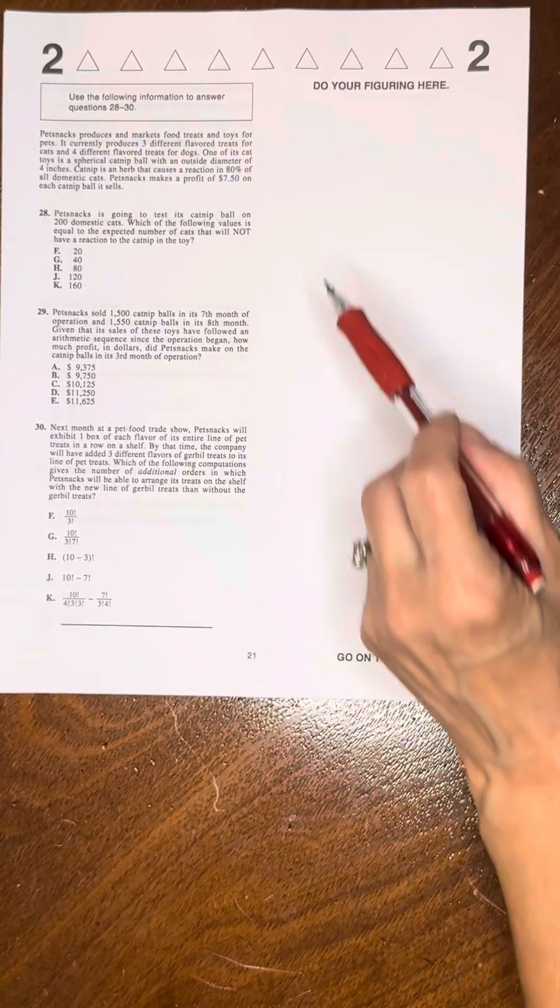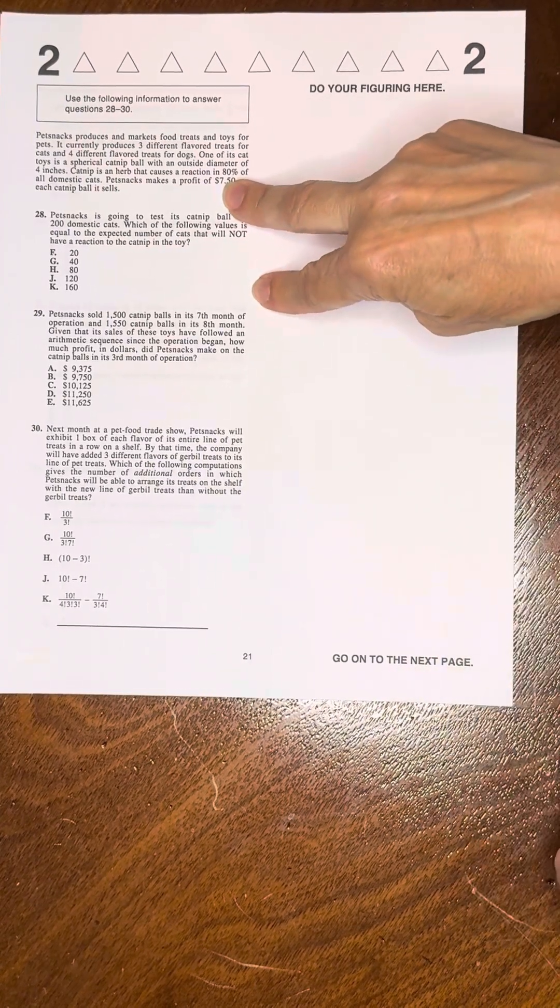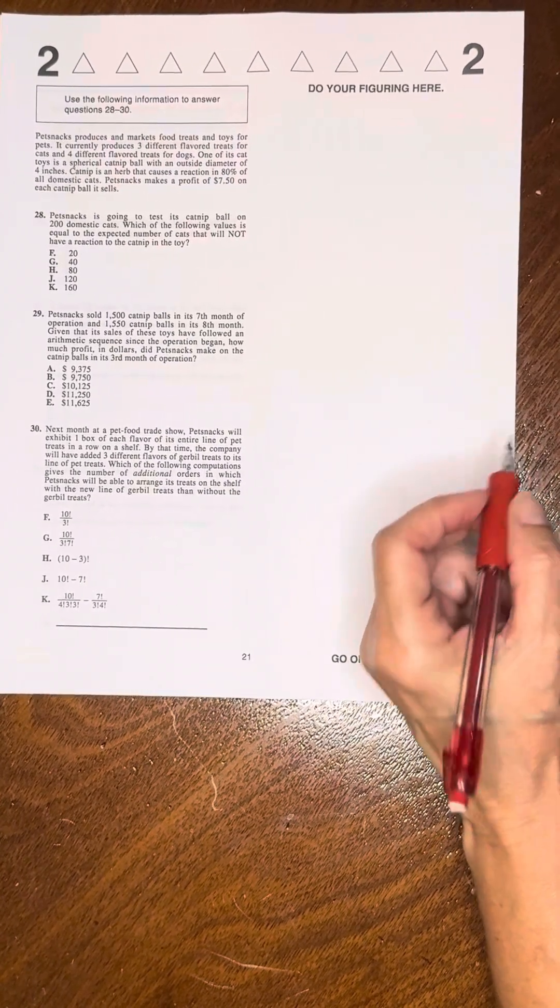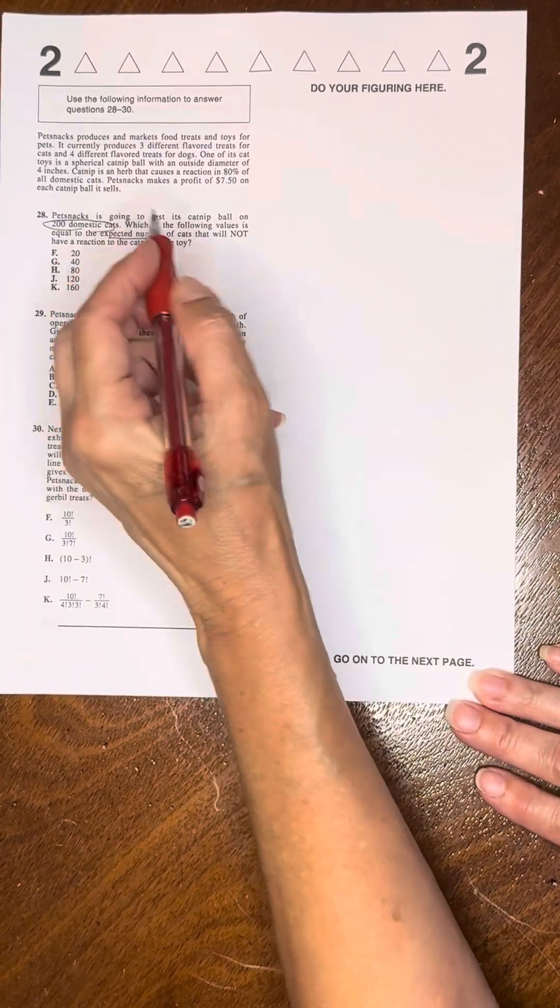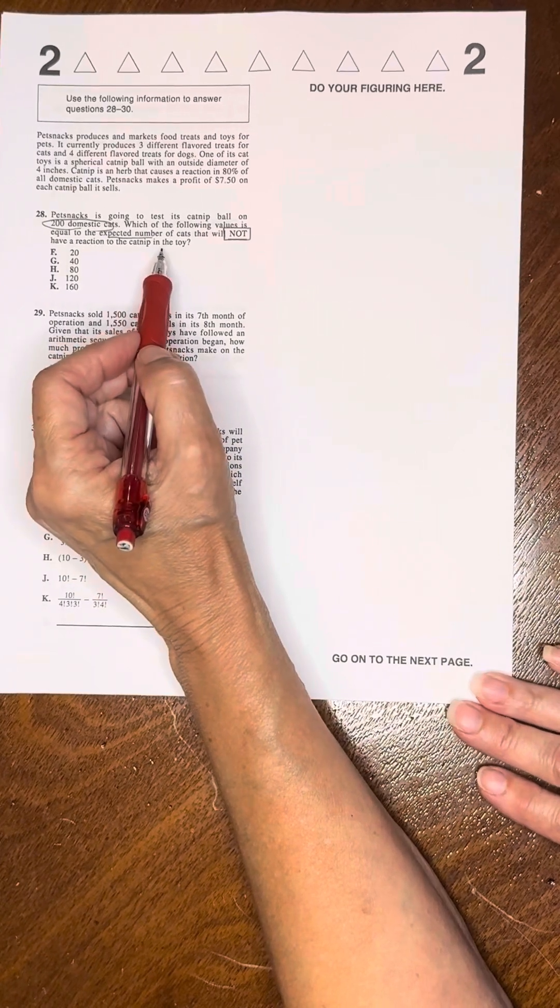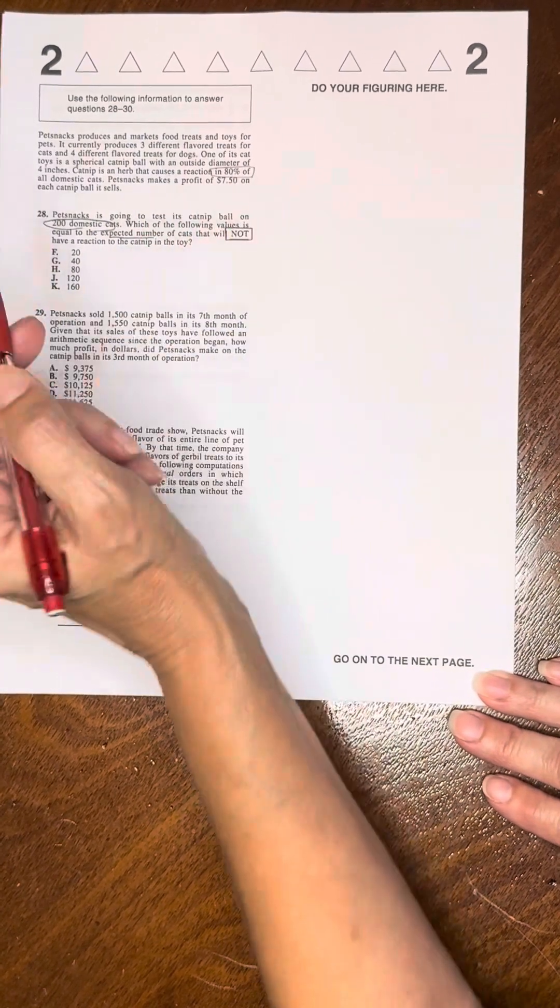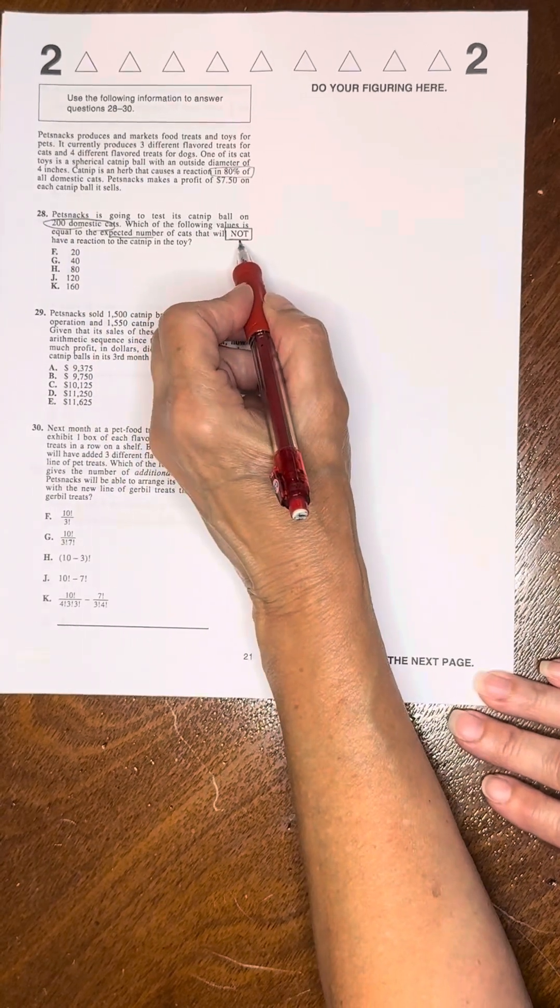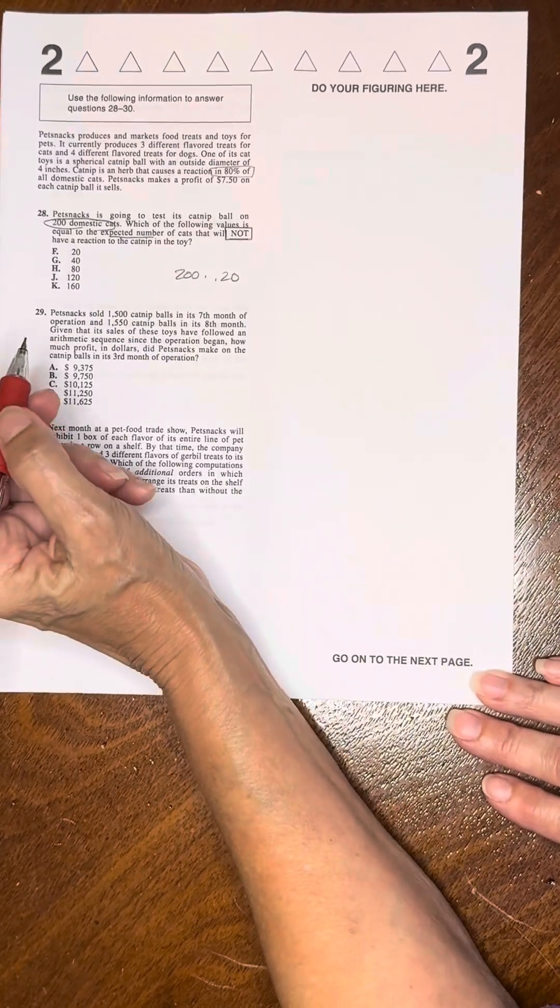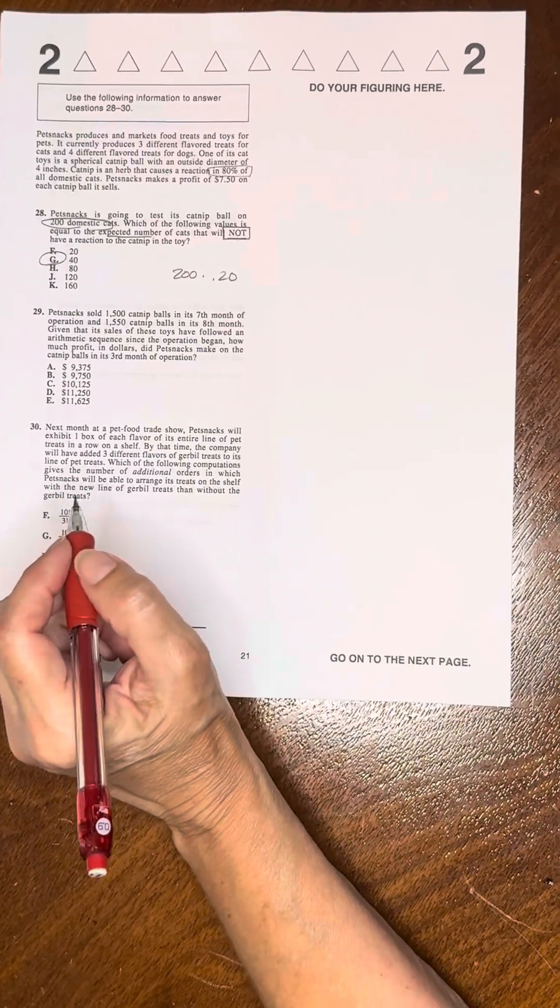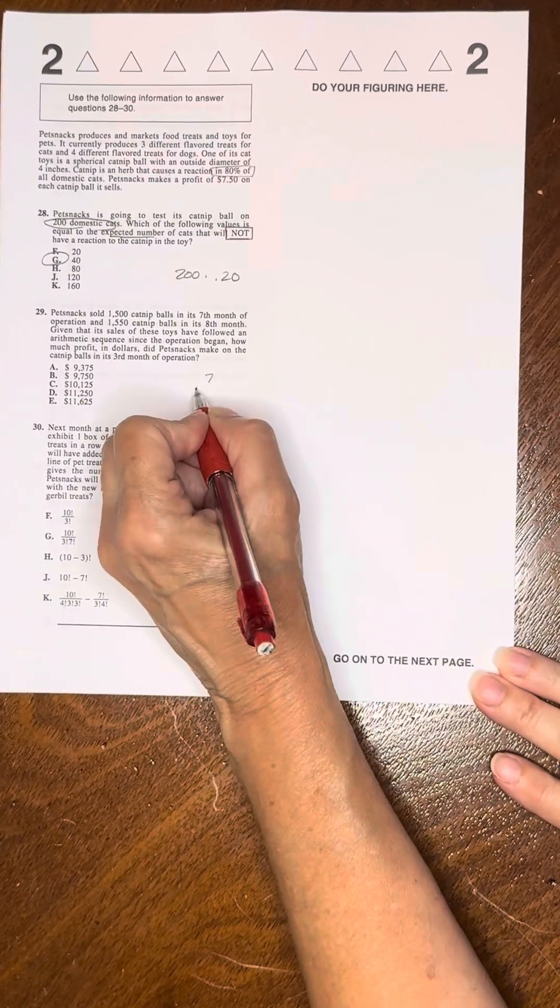Always when you have questions under one set of data, you read the questions first. Problem 28: Pet Snack is going to test its catnip ball on 200 domestic cats. Which of the following values is equal to the expected number of cats that will not have a reaction? Catnip is an herb that causes a reaction in 80% of domestic cats. So the ones that won't is 20%. So it would be 200 cats times 20%, which is 40 cats.